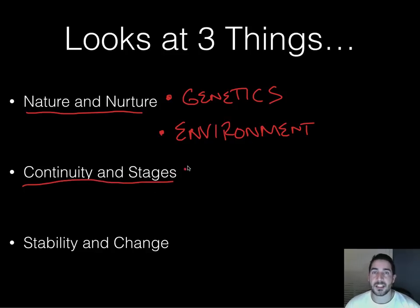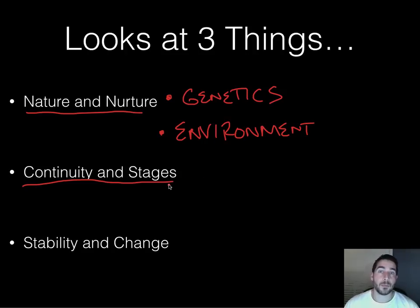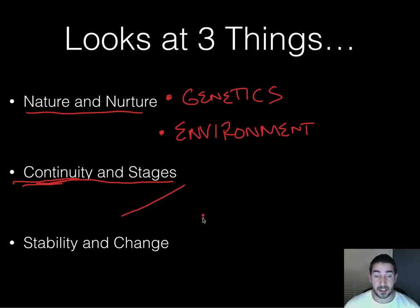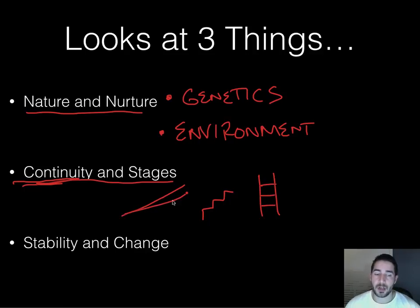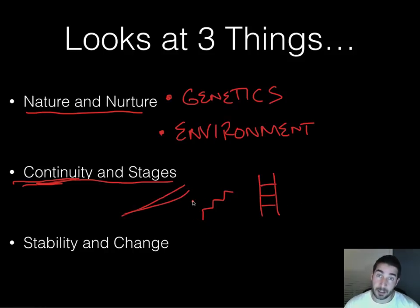Continuity and stages is a second area that developmental psychologists look at. This looks at whether your physical, motor, emotional, and cognitive development is gradual and continuous — like an escalator moving gradually up — or more stage-like, like a stair step or going up the rungs of a ladder. Which is it? Is it more gradual, or does it happen in distinct steps? And does it have to be one way for everything, or are some things in stages and some things more continuous?